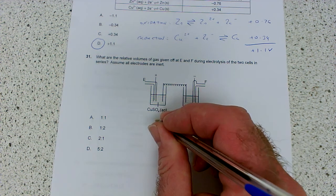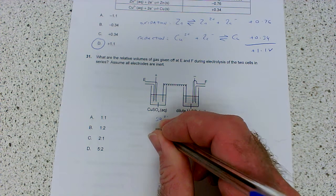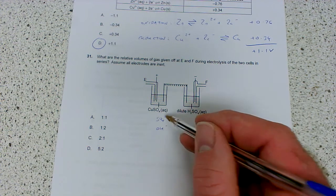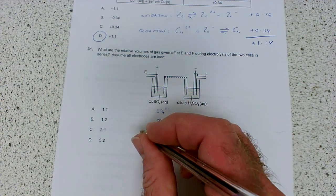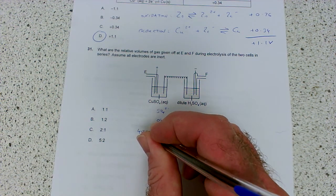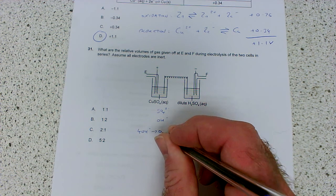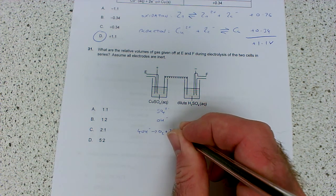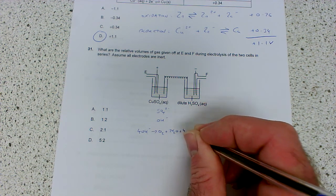With aqueous copper sulfate solution, we've got a choice between two negative ions: sulfate and hydroxide because there's water present. Hydroxide beats sulfate, so the half equation is 4OH- gives 2O2 + 2H2O + 4e-.